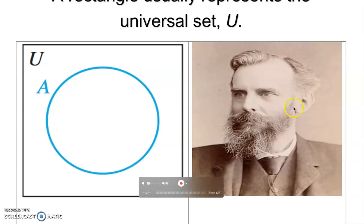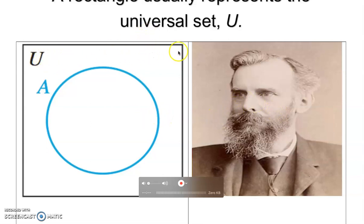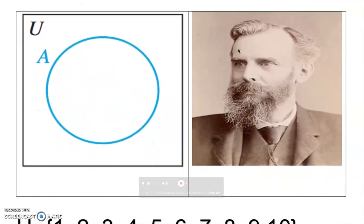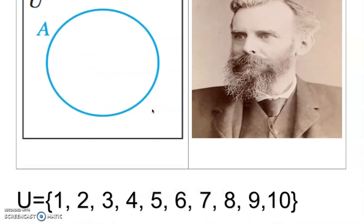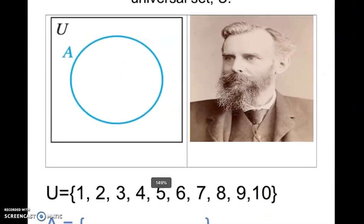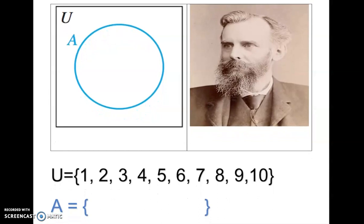His name is John Venn — he's the English mathematician who invented this, so it's only fair to mention his name. The universal set is represented as a rectangle. A rectangle basically represents the entire universal set, and whatever number of elements there are will be inside it. For example, the universal set contains all numbers: one, two, three, four, five, six, all the way to ten — all inside the rectangle.